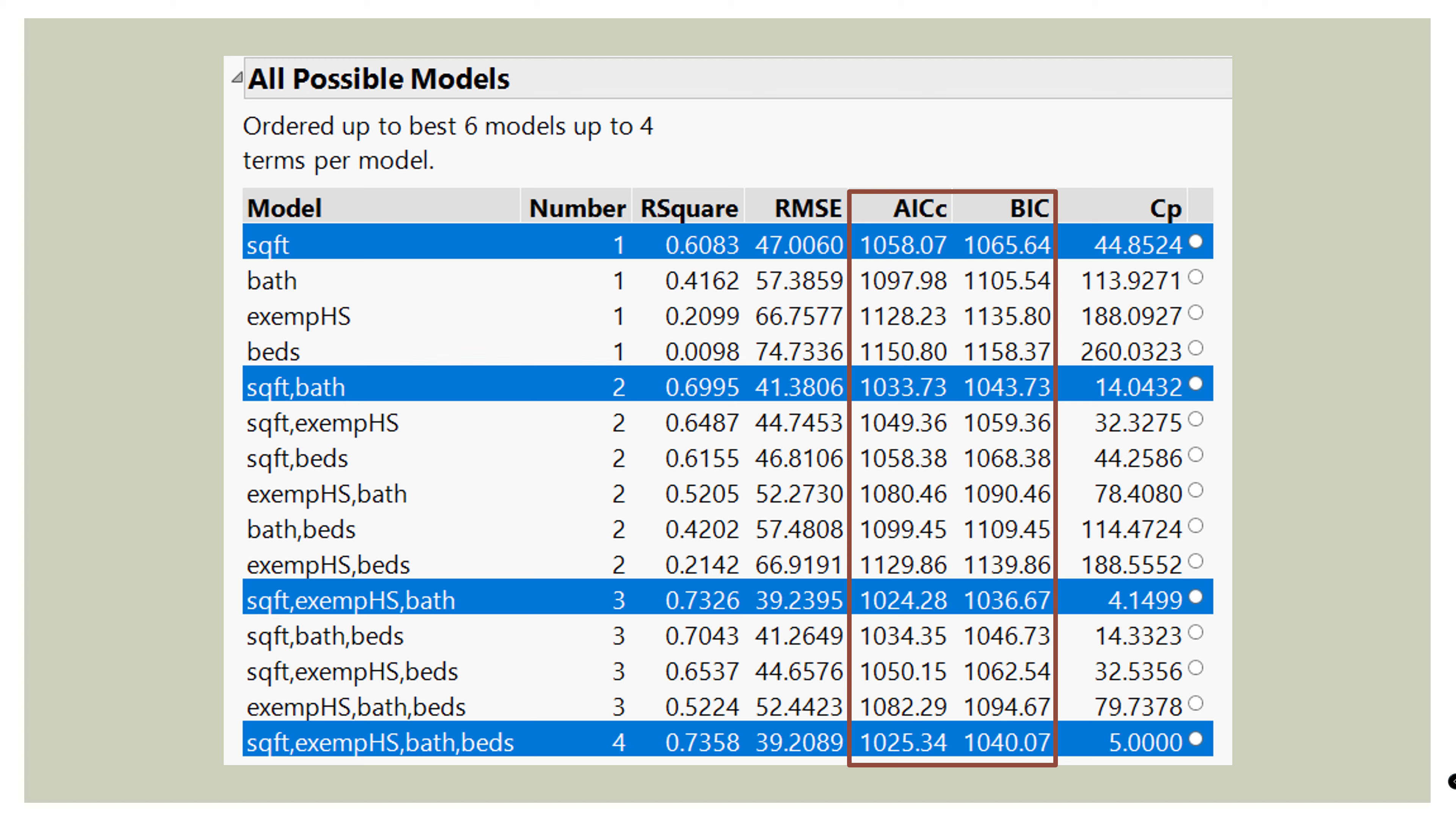This is the house price data we've been using in this playlist. You can see that each column is a measure for a quality of the model. So we have R squared, RMSE, which is root mean square error, also the standard error of the regression. Then we have AICC, BIC, and then CP, which is Mallows C. In this video, we're looking at the two columns, AIC and BIC.